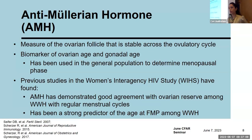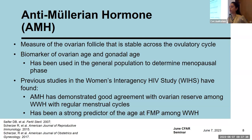Anti-Müllerian hormone, or AMH, is a measure of the ovarian follicle that is stable across the ovulatory cycle and serves as a biomarker of ovarian and gonadal age. It has been used in the general population to determine menopausal phase. Studies mostly coming out of the Women's Interagency HIV Study (WIHS) have found that AMH demonstrates good agreement with ovarian reserve among women with HIV with regular menstrual cycles, and has also been a strong predictor of age at final menstrual period among women with HIV.